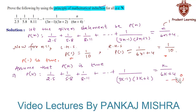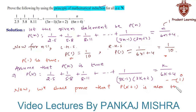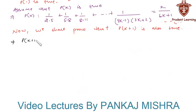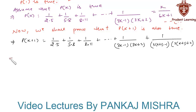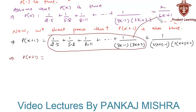In our final generalization step, we shall prove that P(k+1) is also true. P(k+1) = 1/(2×5) + 1/(5×8) + ... + 1/((3k−1)(3k+2)) + 1/((3(k+1)−1)(3(k+1)+2)). We substitute the value of the sum from equation 1 as k/(6k+4), giving us k/(6k+4) + 1/((3k+2)(3k+5)).